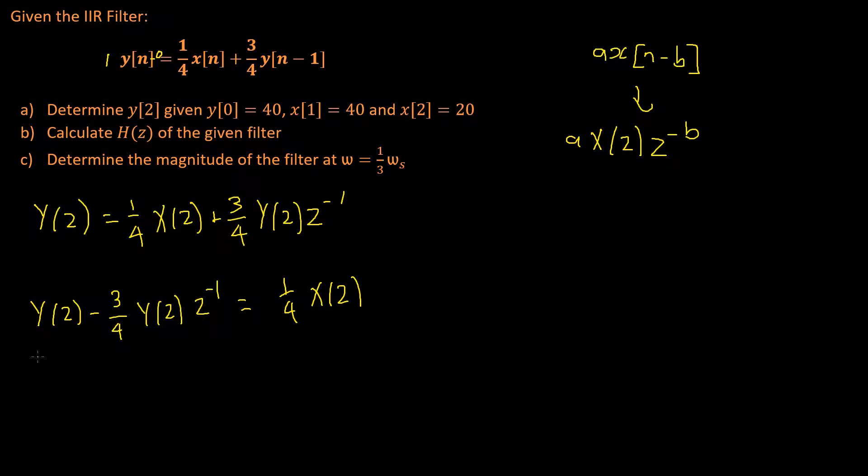So here we can bring our y of z out the front of our equation, and that will give us y of z, 1 minus 3 quarters z to the power of negative 1, and that's all equal to 1 quarter times x of z.